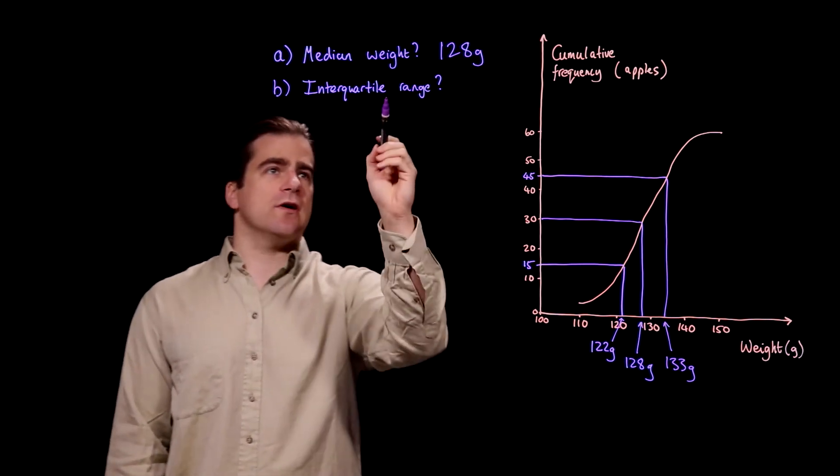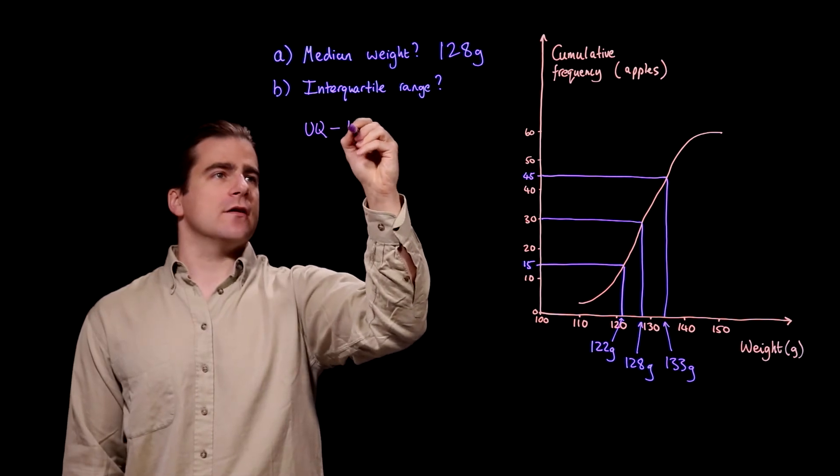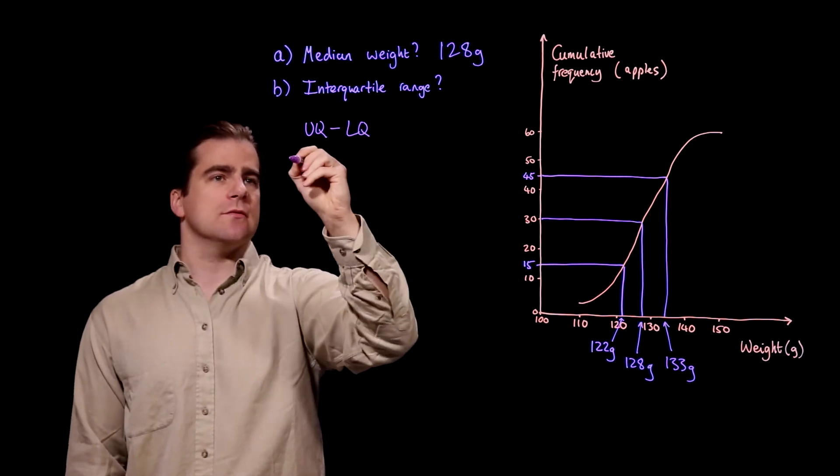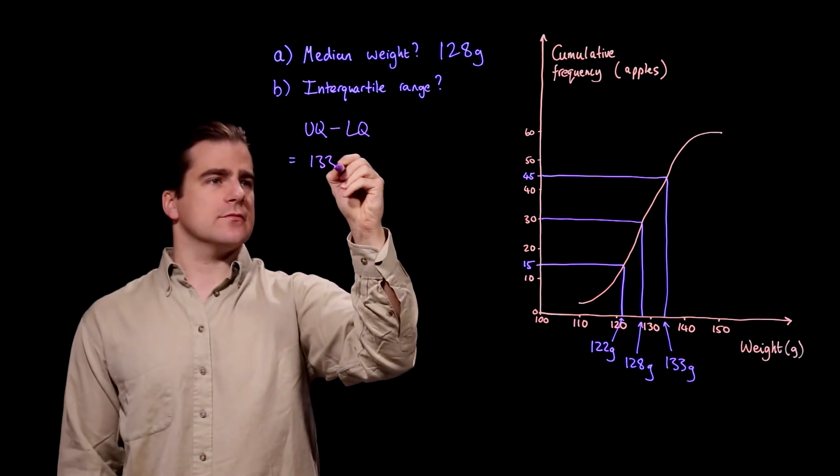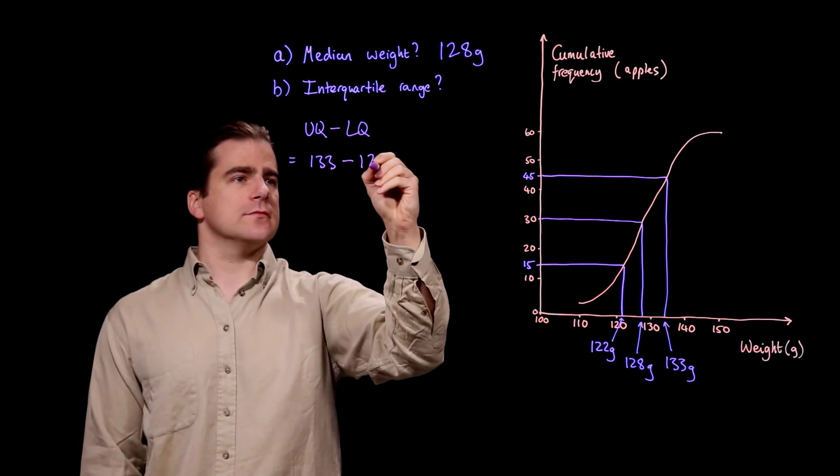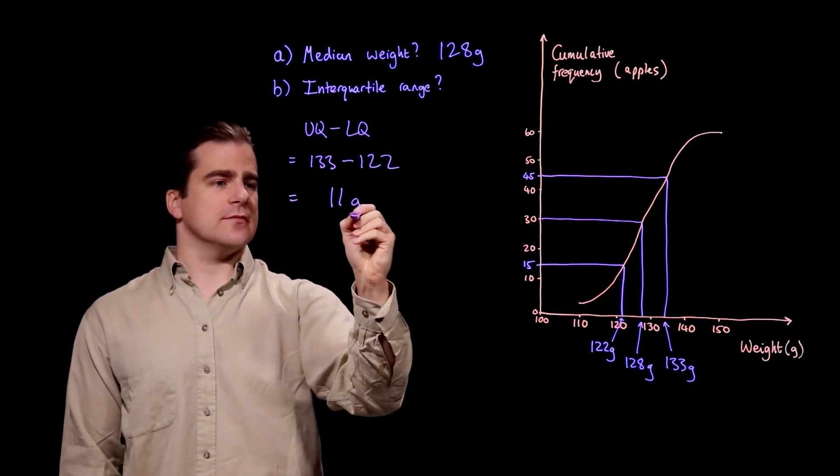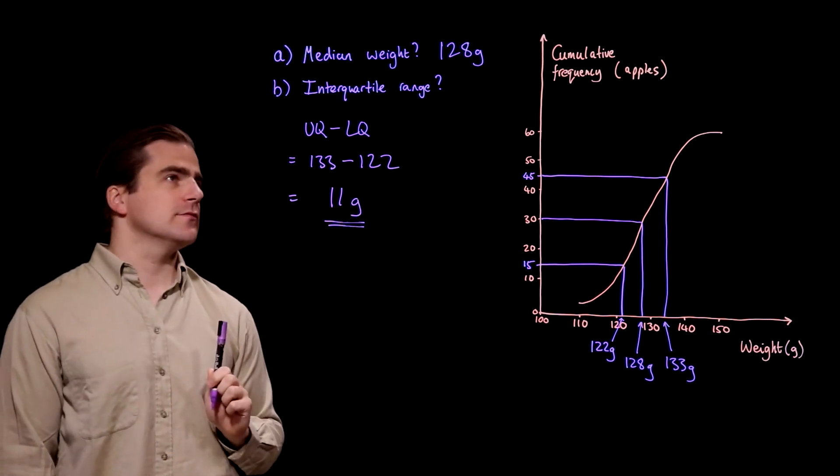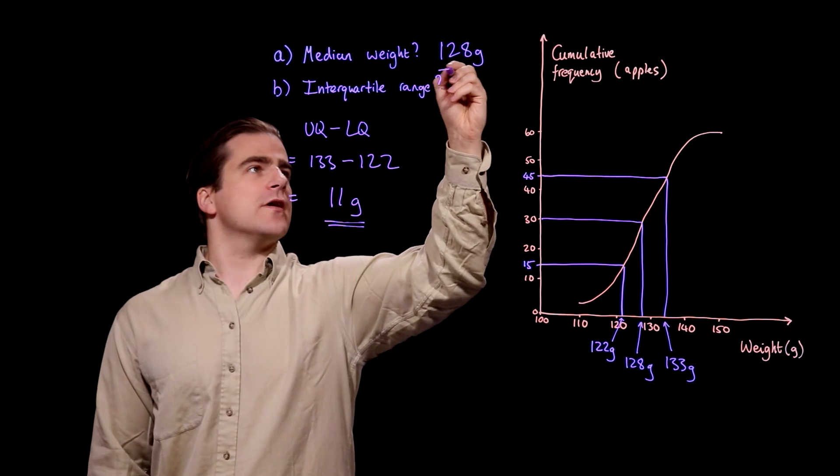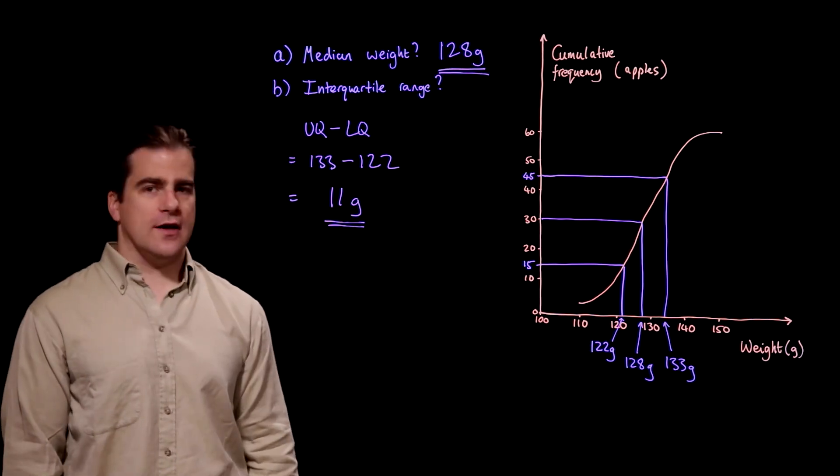And the interquartile range is the upper quartile minus the lower quartile, which is 133 minus 122, which is 11 grams. And that is the interquartile range. So a median of 128 grams and an interquartile range of 11 grams.